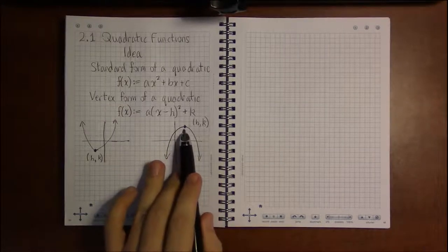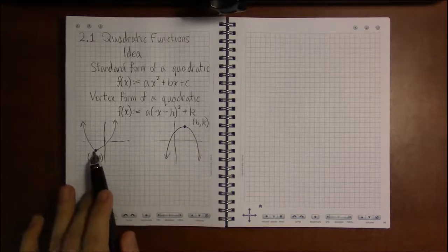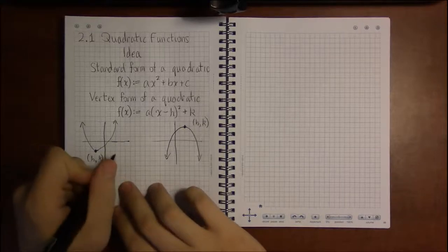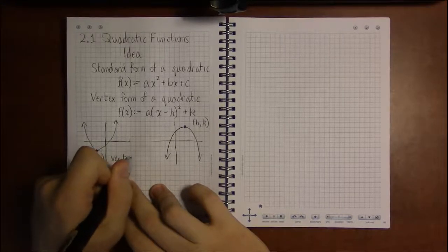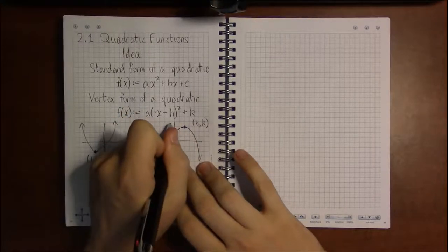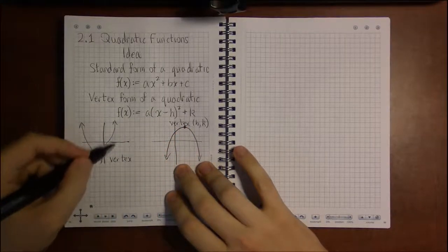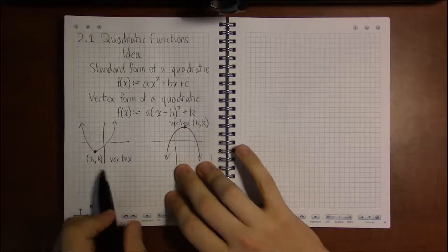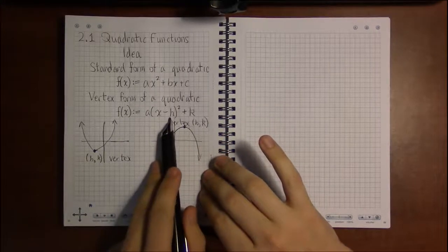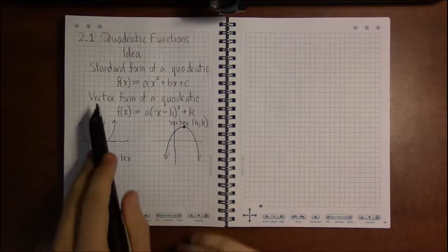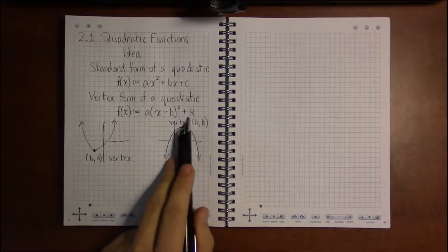If the quadratic opens down, these points are the vertex (h, k). So the vertex of a parabola is simply the highest or lowest point on the parabola, and the coordinates h and k are the same as what appear in the vertex form. This is why the vertex form is very nice because it tells you right away where the extreme point is on this graph.